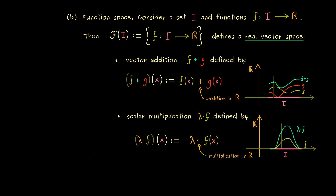Note that the multiplication here is again the ordinary multiplication in the real number line — we simply use it to define the abstract scalar multiplication. The only thing that remains to show is that the 8 rules from the vector space definition are satisfied here. But this is not hard at all, because all these properties are inherited from the operations in the real number line. It's a good exercise, and you should definitely remember this example of a vector space because it occurs a lot in different branches of mathematics.